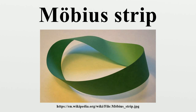Properties. The Möbius Strip has several curious properties. A line drawn starting from the seam down the middle meets back at the seam but at the other side. If continued, the line meets the starting point, and is double the length of the original strip. This single, continuous curve demonstrates that the Möbius Strip has only one boundary. Cutting a Möbius Strip along the center line with a pair of scissors yields one long strip with two full twists in it, rather than two separate strips; the result is not a Möbius Strip. This happens because the original strip only has one edge that is twice as long as the original strip.